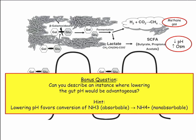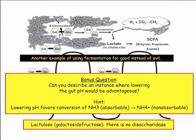Lactose is not absorbed; it gets fermented; you get hydrogen ions. We take advantage of that in the cirrhotic patient. You give them something that produces hydrogen ions — you want hydrogen ions to absorb ammonia. That's your cirrhotic story: lactulose. Lactulose is a sugar that's not absorbed; it's fermented. You create hydrogen ions that bind ammonia, and it's one of the management strategies for hepatic encephalopathy. So it's using fermentation for good instead of evil.